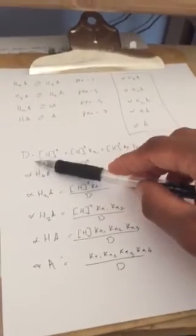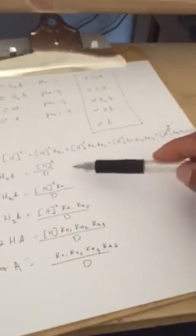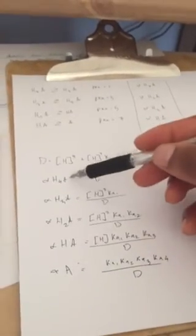But it's pretty straightforward. Once you find the denominator, which is the same for each one of the expressions, you can easily find the amount of that type of acid.